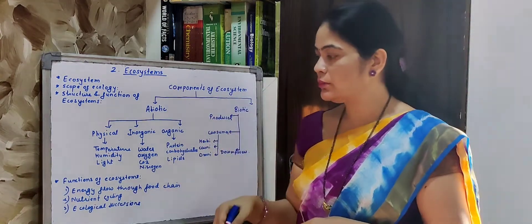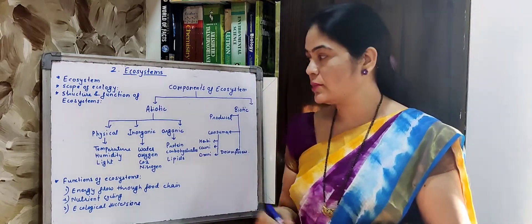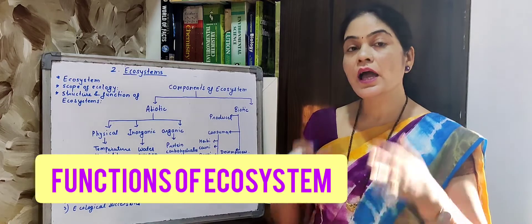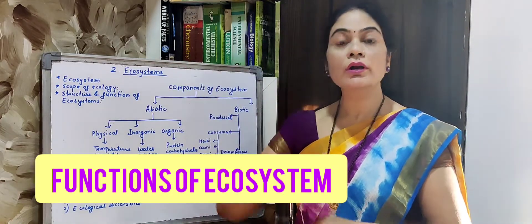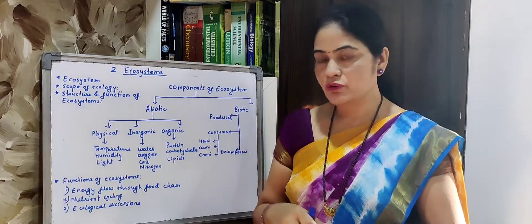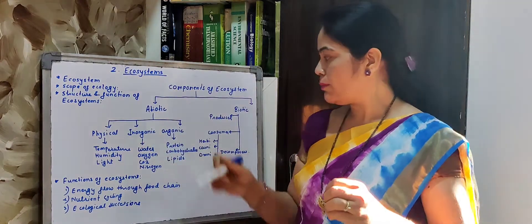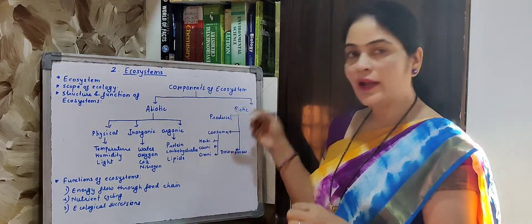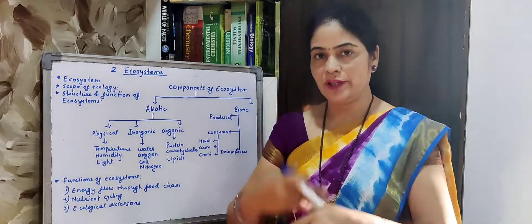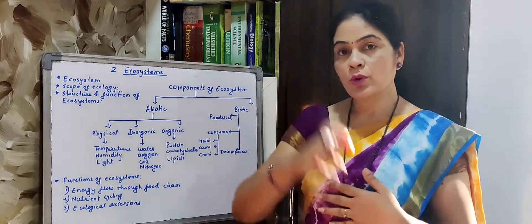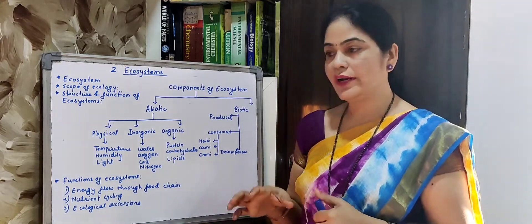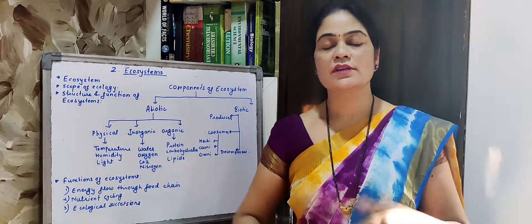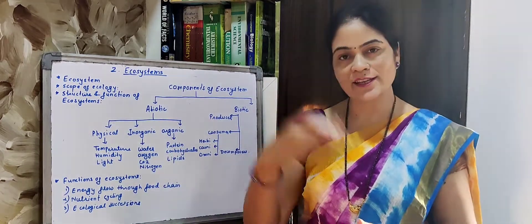This is all about the components of the ecosystem. The last topic is the function of ecosystem. The basic function of ecosystem is the energy flow from lower level to higher level — energy flow through the food chain. Energy is absorbed by the producer in the form of sunlight, they produce food, that food is consumed by the consumer, and then by the decomposers — this is energy transfer and energy flow. The basic function of ecosystem is the flow of energy throughout the cycle. After that, nutrient cycling — nutrients go from soil to plants, then through organisms and decomposers back to the soil again.